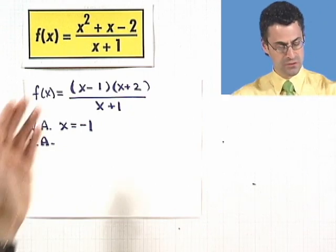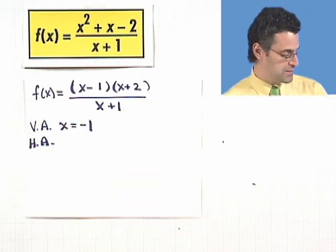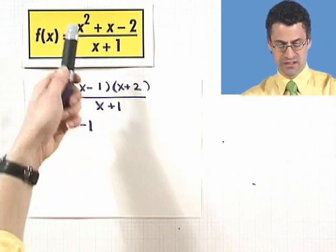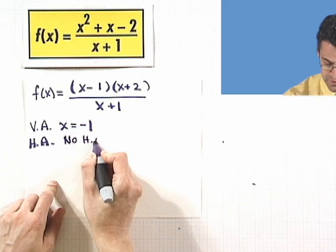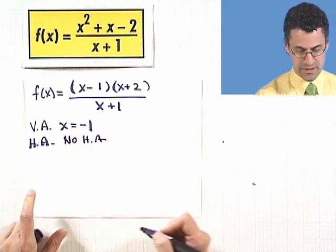Anyway, lots of stuff here. Whereas in here, we see the degree in the numerator is greater. So it dominates, and so there's no asymptote here, no horizontal asymptote. Okay, great.